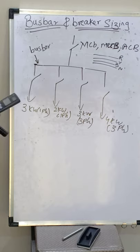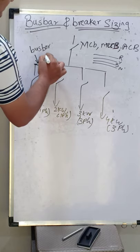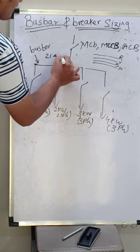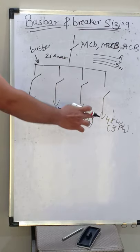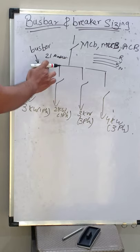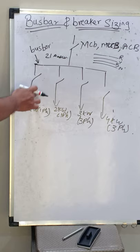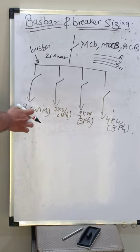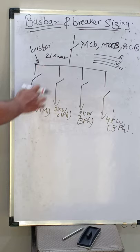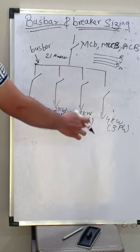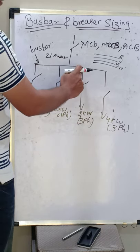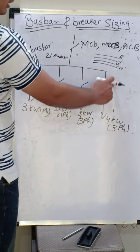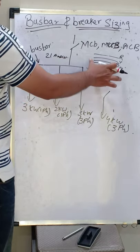The total load of 12 kilowatt connected to this bus bar means the current drawn will be 21 ampere, so the bus bar should be capable of withstanding at least 21 ampere. From this bus bar, I will tap different cables to the connected loads — running a cable from here to this load. For a single-phase 3 kilowatt load I run R phase and neutral; for a three-phase 3 kilowatt load I tap R, Y, B, and neutral from the neutral bus bar.